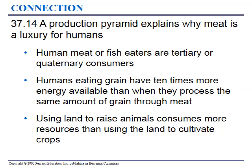A production pyramid explains why meat is a luxury for humans. If you eat meat or fish, you're at the tertiary or quaternary levels of consumer. Humans eating grain have 10 times more energy available when they process the same amount of grain directly versus through meat. If you eat the corn directly, you get more calories than if you fed the corn to a cow and then ate the cow. Using land to raise animals consumes more resources than using land to cultivate crops.